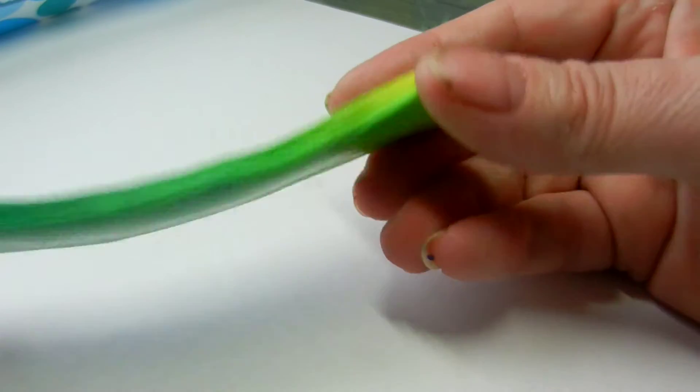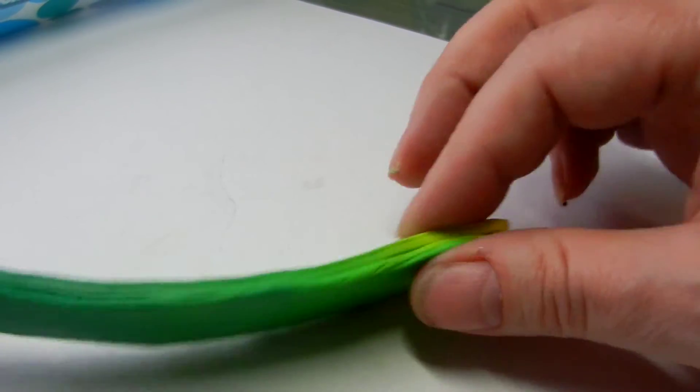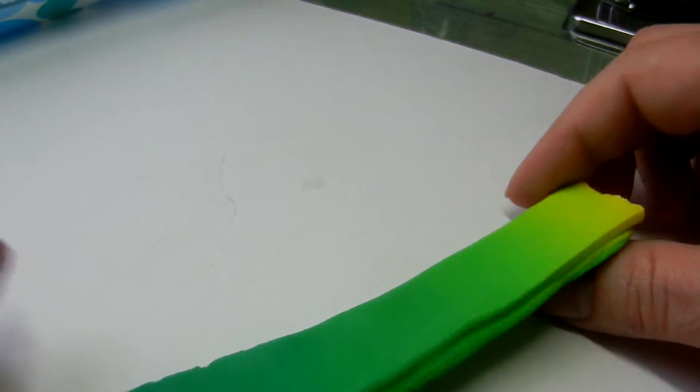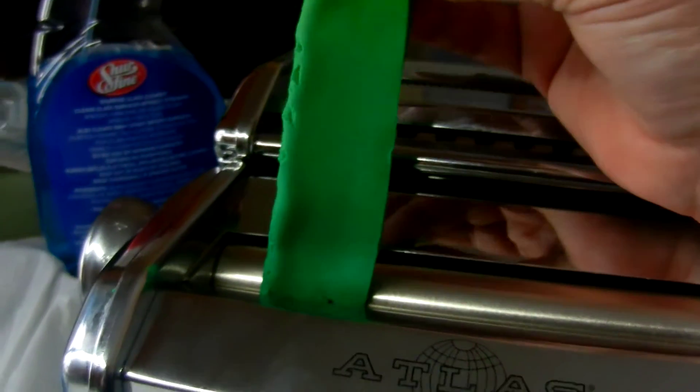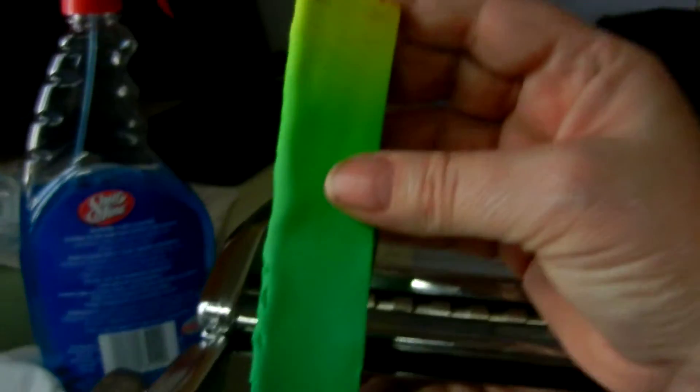And you saw what I did, I just folded it in half, so the yellow is matching the yellow and the dark is matching the dark. Then you're going to put it through the pasta machine like this. This is the number one setting.